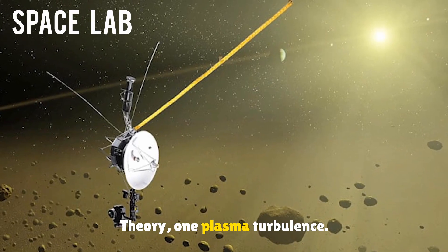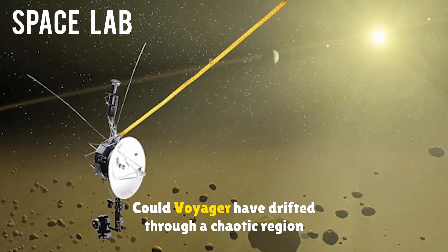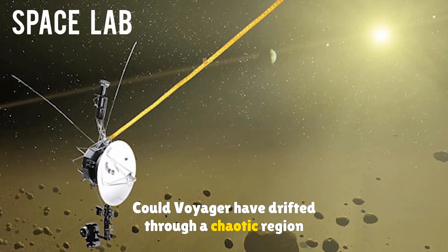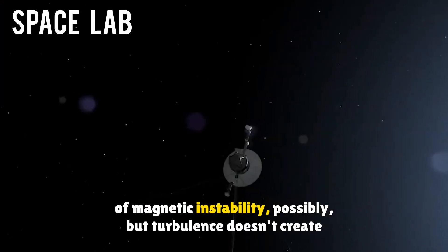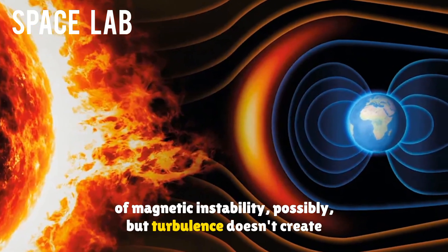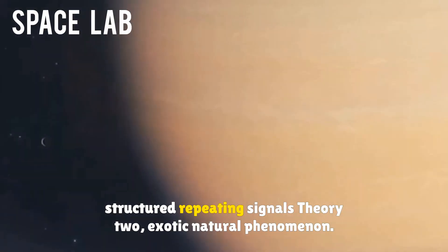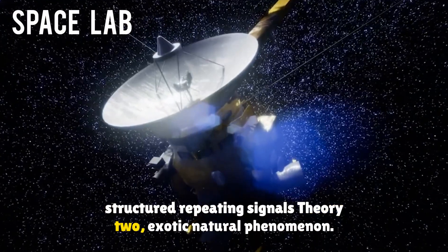Theory 1: Plasma turbulence. Could Voyager have drifted through a chaotic region of magnetic instability? Possibly. But turbulence doesn't create structured, repeating signals.